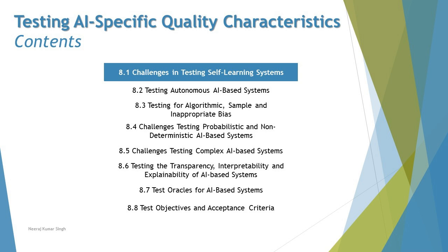There are a lot of topics we will be covering here. We'll be talking about challenges in testing a self-learning system, testing an autonomous AI-based system, testing for algorithmic and inappropriate biases, testing probabilistic and non-deterministic AI-based systems, challenges in complex AI-based system testing, testing transparency, interpretability and explainability, test oracles for AI-based systems, and objectives and acceptance criteria. Today we are getting started with section 8.1.